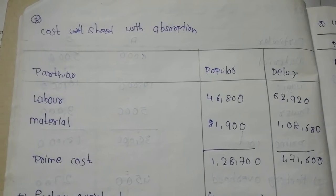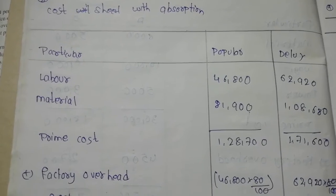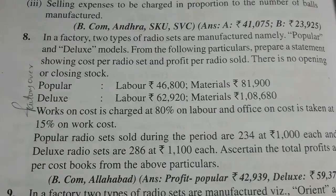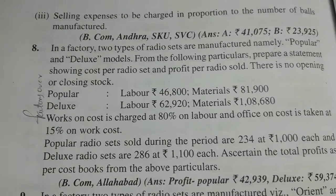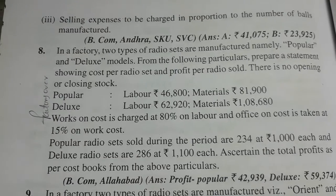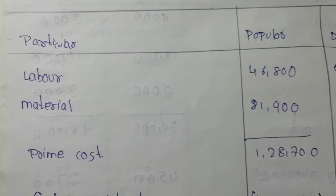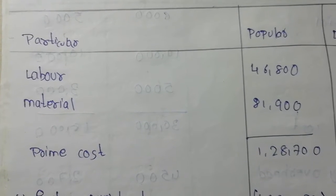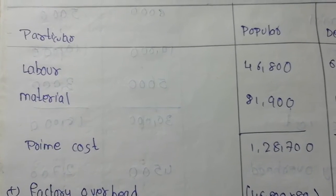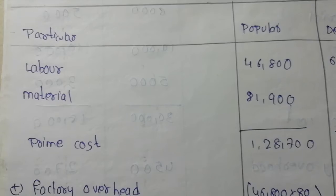For the popular model: labor is 46,800 and material is 81,900. Popular model totals: labor 46,900 and material 81,900. Total prime cost for popular model is 1,28,700.